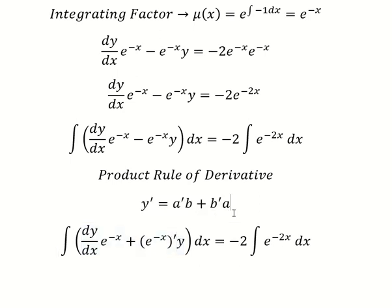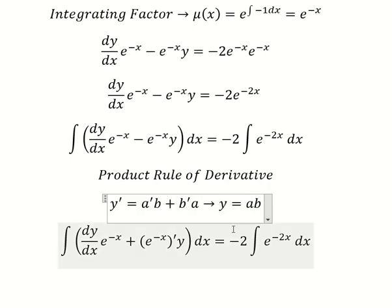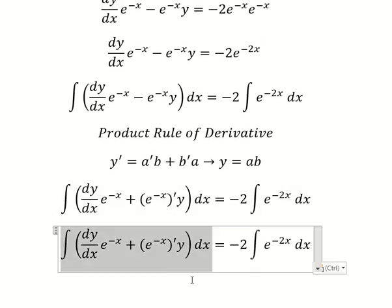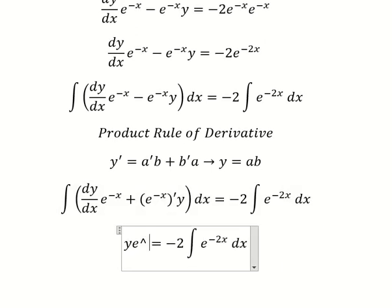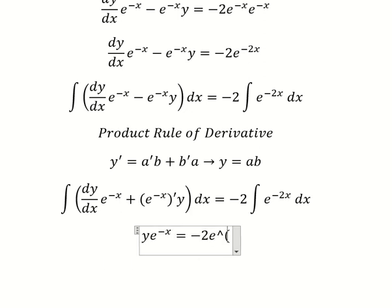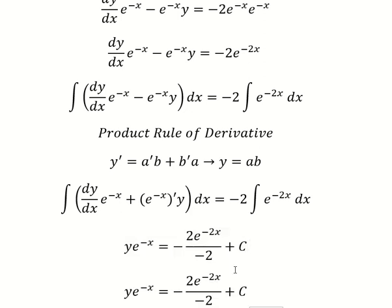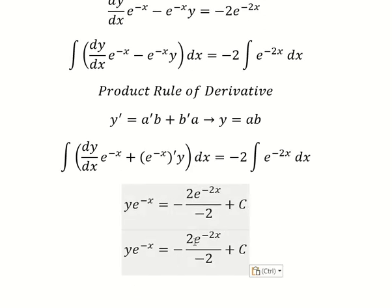The interpretation of this is y equals ab. So we have y times e to the power of negative x. The integration of this gives us e to the power of negative 2x over negative 2, and I will add the constant C. We divide both sides by e to the negative x.